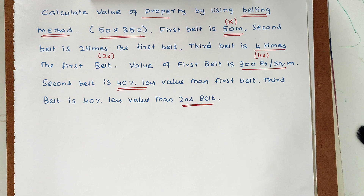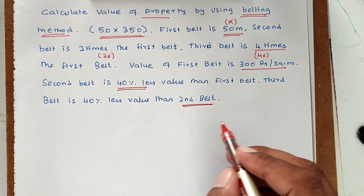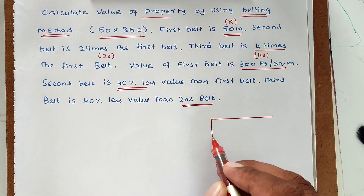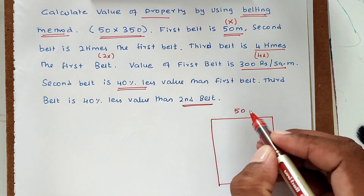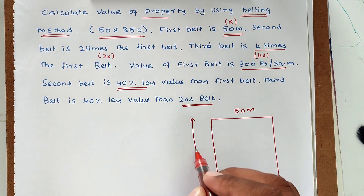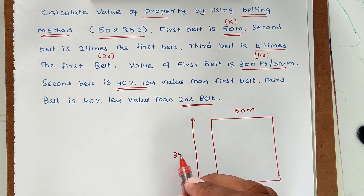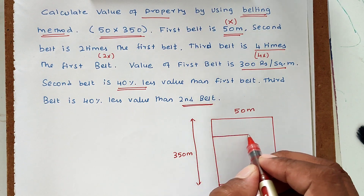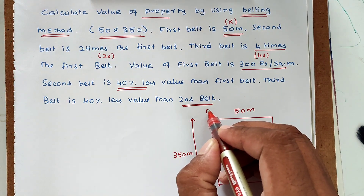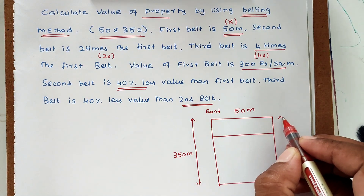There are many methods available to calculate the value of a property — the comparative method, analytical method, and others. In this problem we use the belting method. Now we can draw the property dimensions. This is the plot: its width is 50 meters and the total depth is 350 meters. The road-facing side is the first belt at 50 meters.